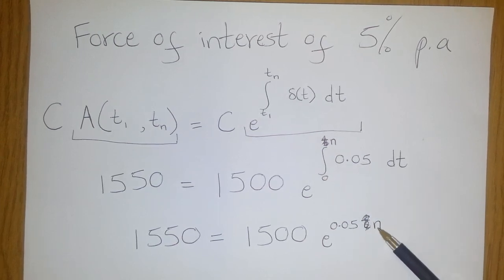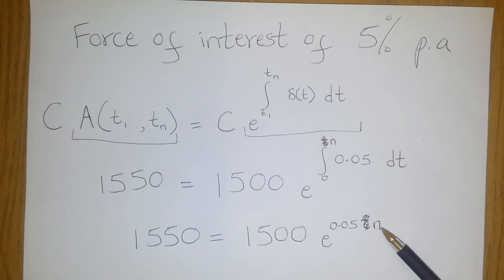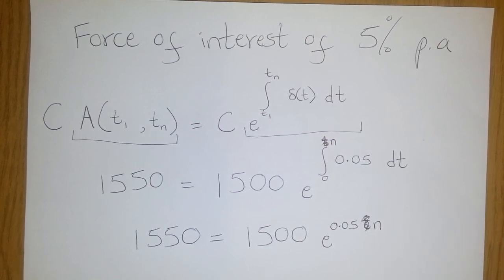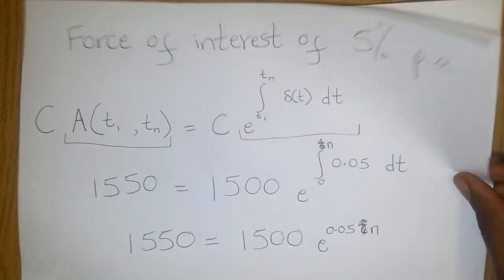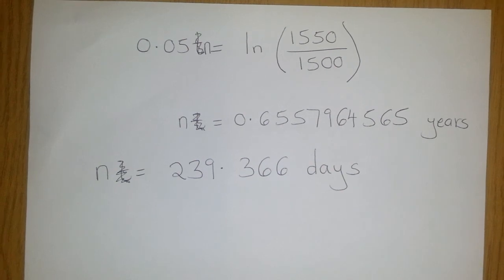So the value of this integral is simply going to be 0.05n, such that if you divide through by 1500 and then take natural log on both sides, you end up with 0.05n.